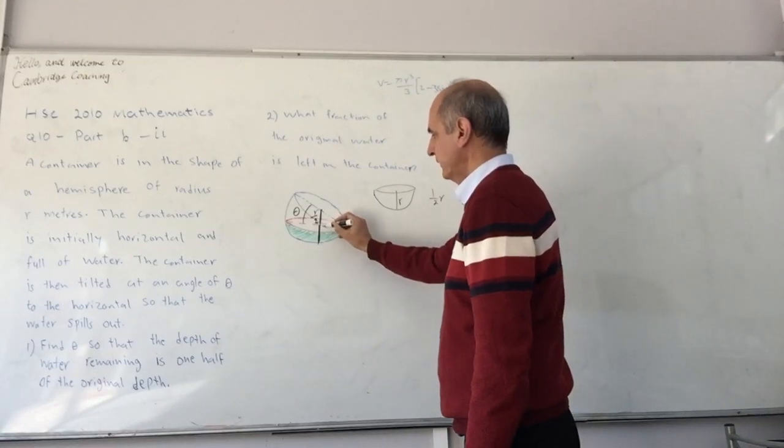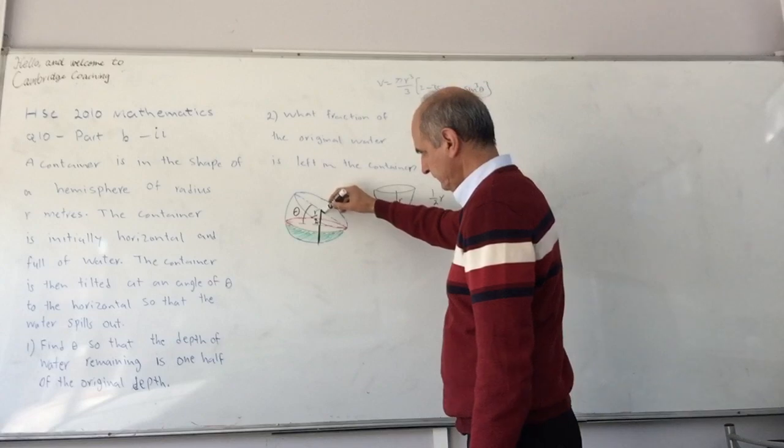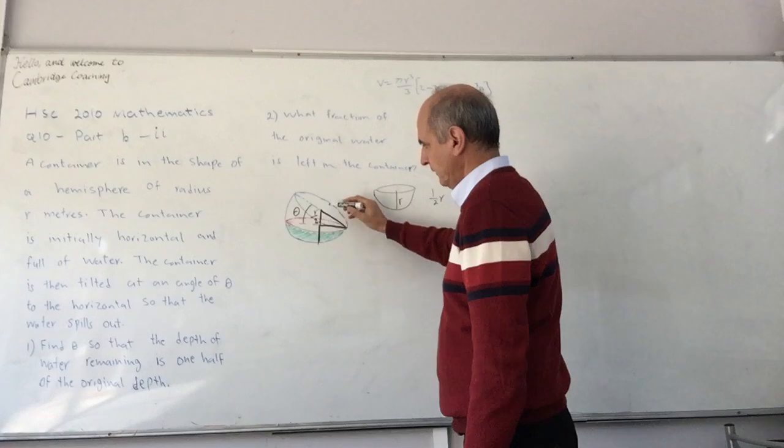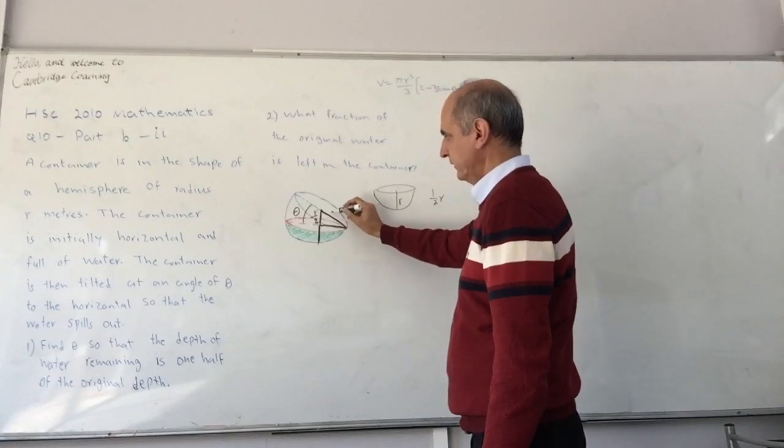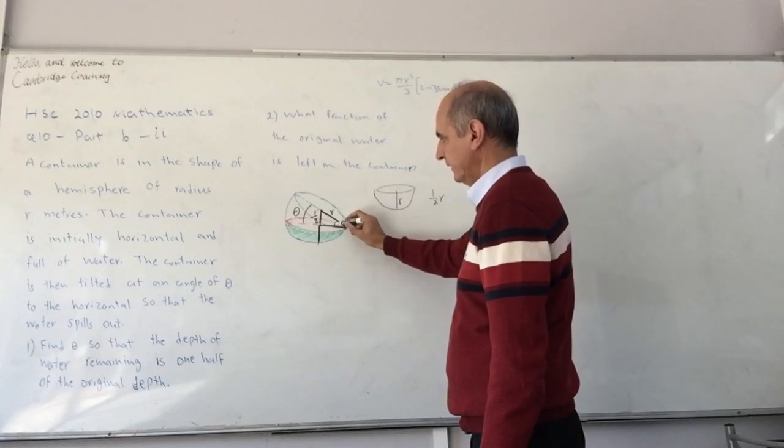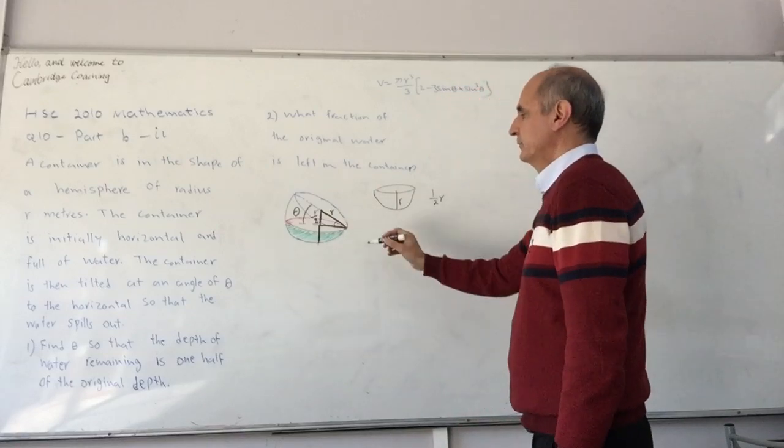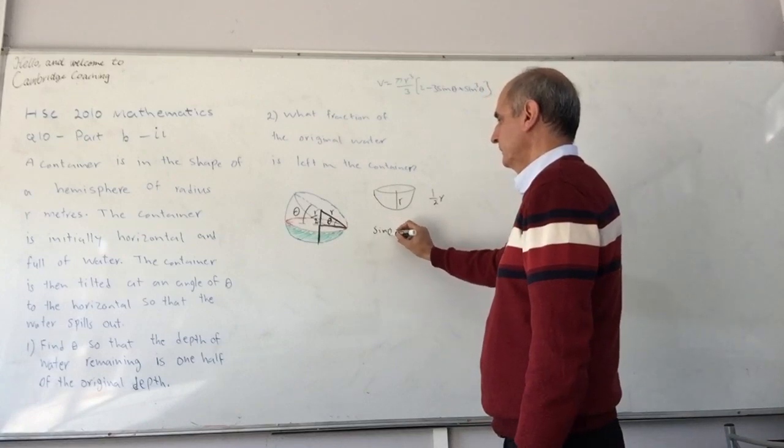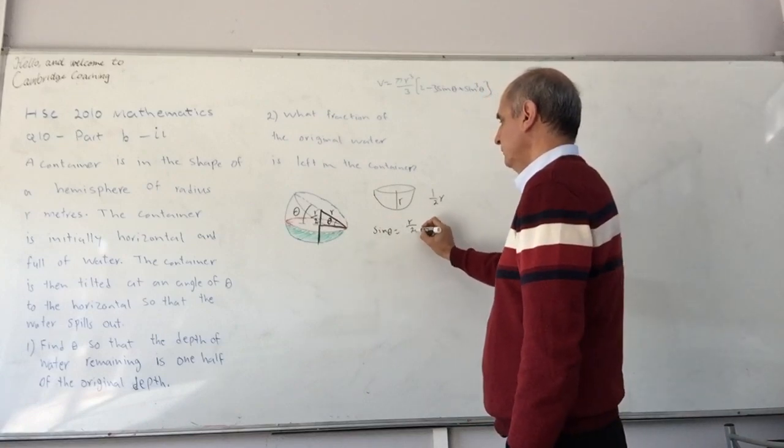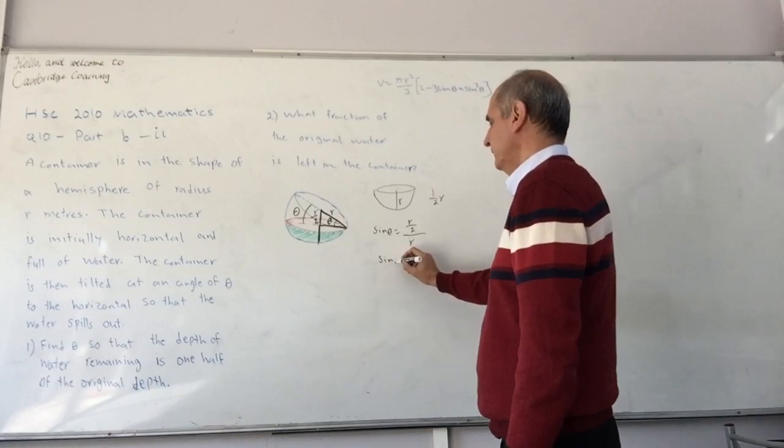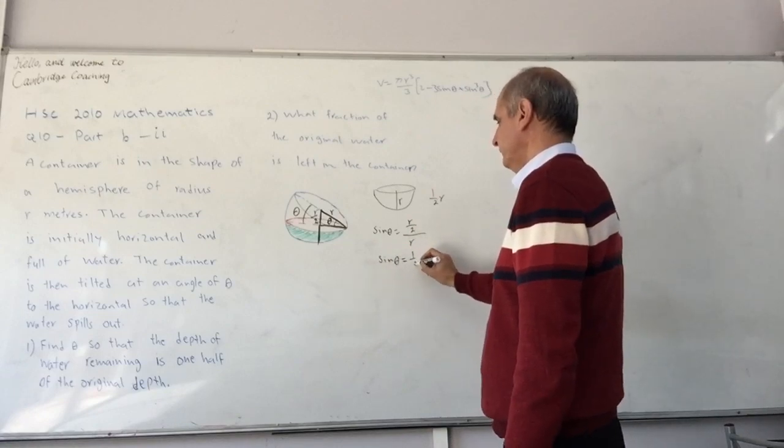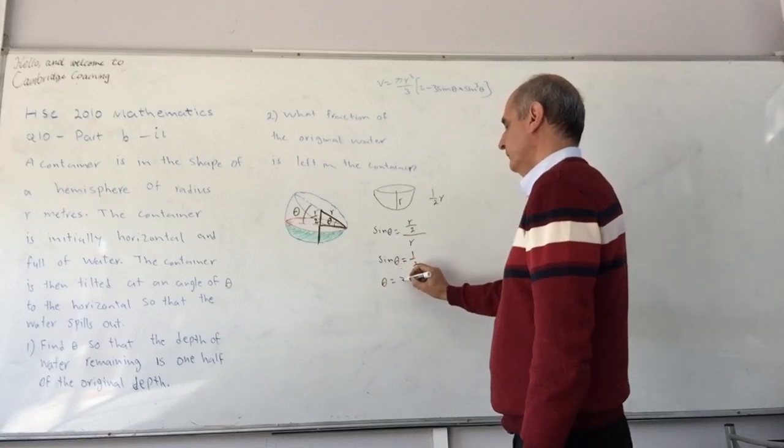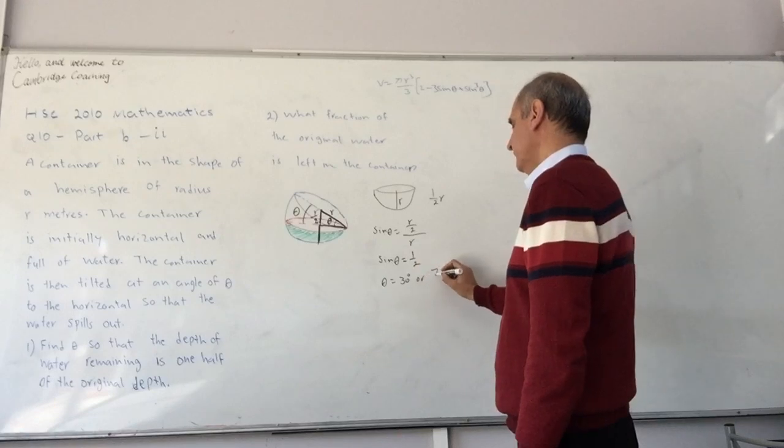And I have this right angle triangle here, which this width is r on 2 and this is again the radius. And this is the angle theta. And so, I have sin theta is equal to r on 2 over r, or sin theta is half, if you simplify that. So that means theta is equal to 30 degrees or pi on 6.